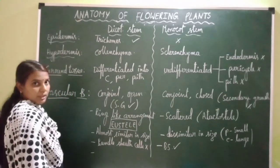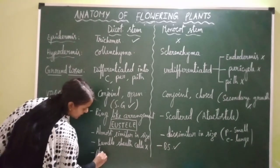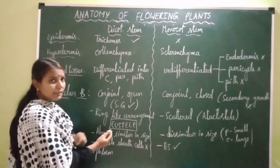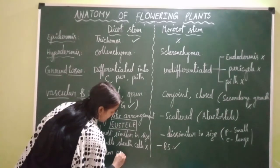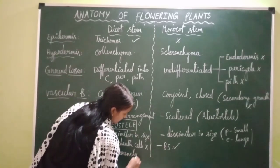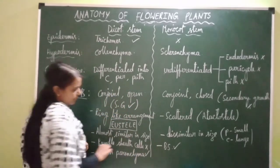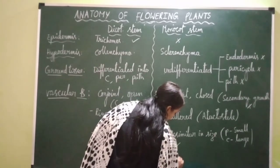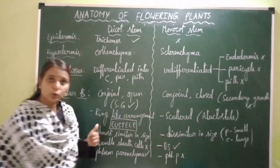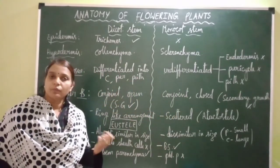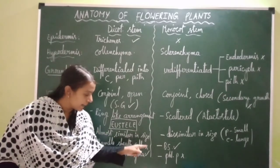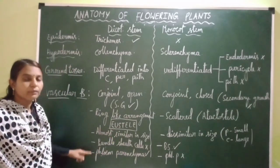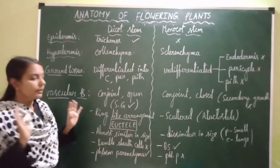In dicot stem, phloem parenchyma is present in the phloem of the vascular bundles. In the phloem of vascular bundles of monocot stem, phloem parenchyma is absent. Phloem is made up of sieve tubes, companion cells, phloem parenchyma, and phloem fibers. Among these four elements, phloem parenchyma is absent in monocot stem; the remaining three elements are present. In dicot stem, all four elements are present.